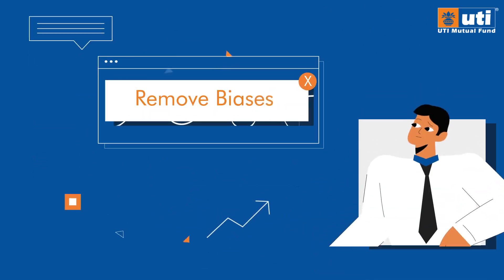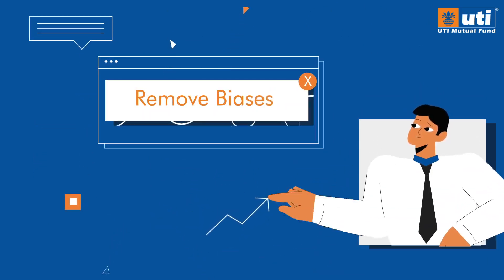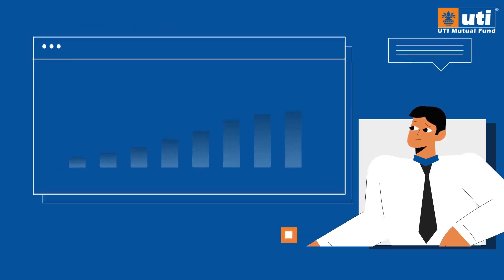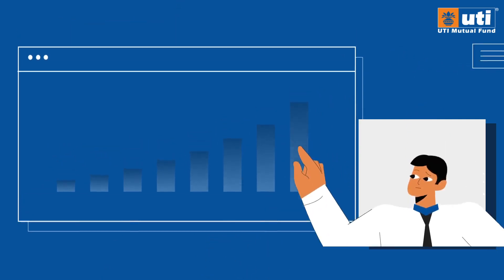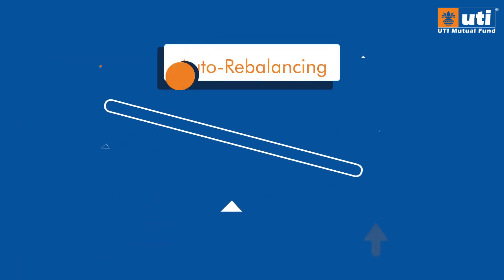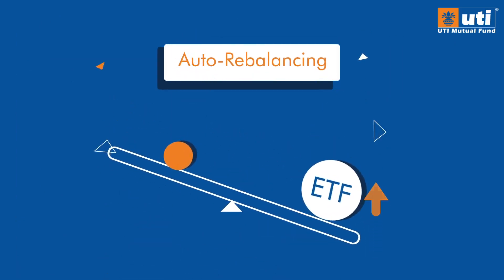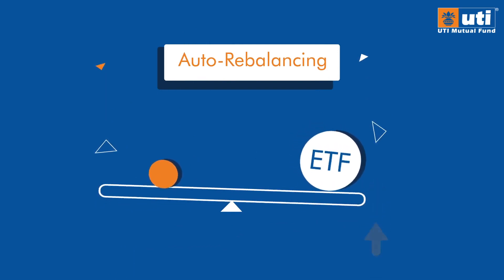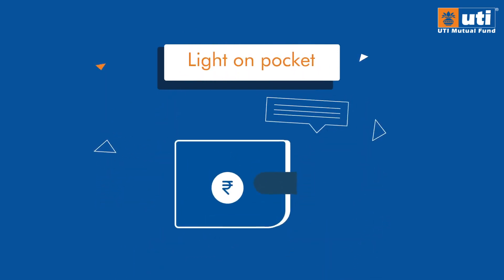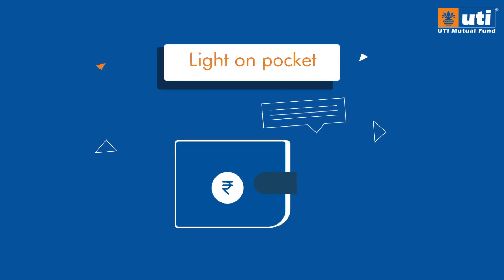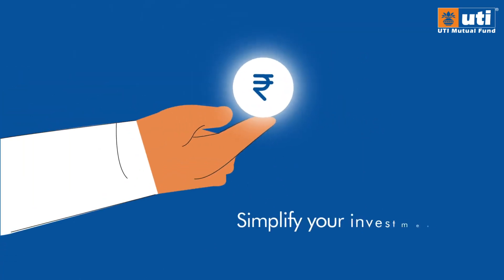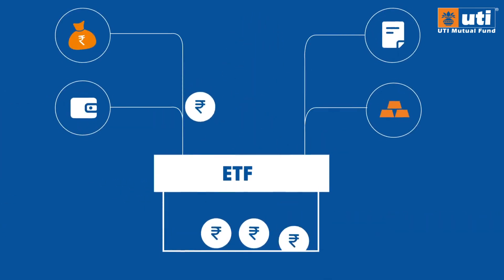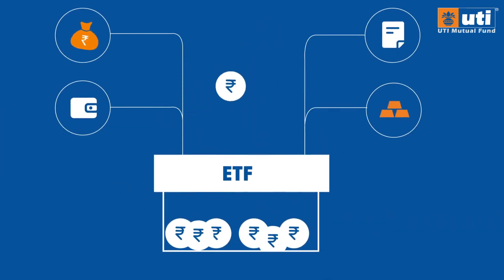ETFs also remove biases, as they invest in securities based on the index they follow, removing fund managers' inclination towards individual securities. Auto rebalancing occurs as ETFs rebalance their portfolio based on changes in the underlying index. They are also light on pocket, as they require a relatively small amount to invest. Simplify your investments and invest in a diversified portfolio at low cost with the help of ETFs.